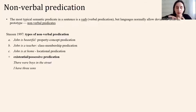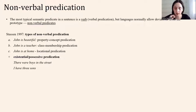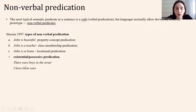Often, together with nonverbal predication, existential and possessive predication is considered, because in different languages they can be expressed with the same means of expression. For example, 'there were boys in the street' is existential predication, and 'I have three sons' is possessive predication.